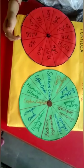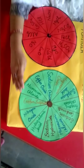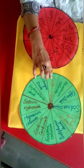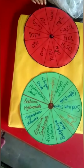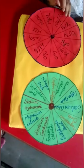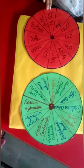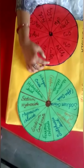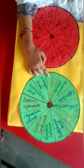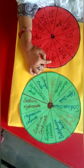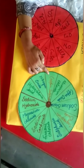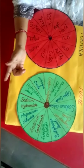Similarly, if we want to find the formula of copper sulfate, the student rotates the disc and finds copper sulfate. The formula and the name come opposite to each other — the answer is correct.